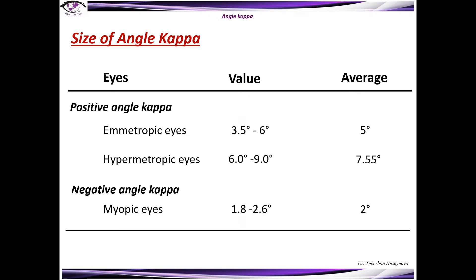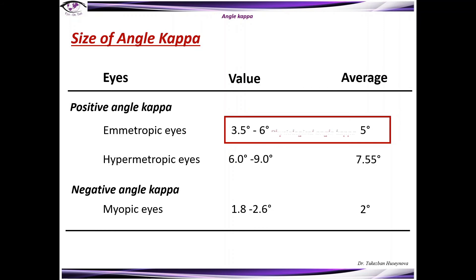Size of angle kappa. The size of angle kappa differs between emmetropic, hypermetropic, and myopic eyes. Physiological angle kappa is between 3.5 and 6 degrees, but on average it is 5 degrees. As we can see from the table, hypermetropic eyes have a larger angle kappa value compared to myopic eyes, where the angle kappa is on average 2 degrees.